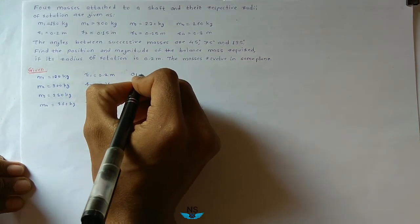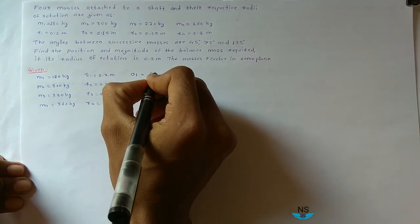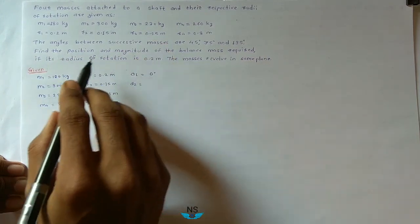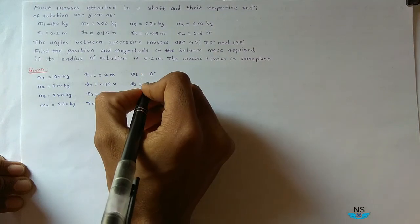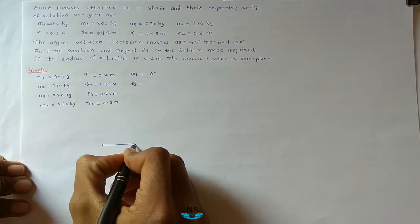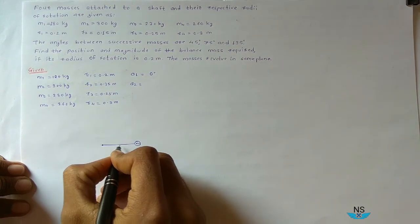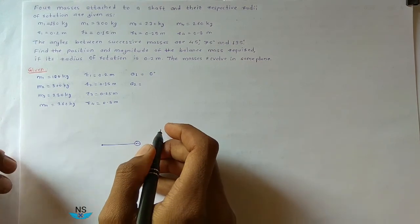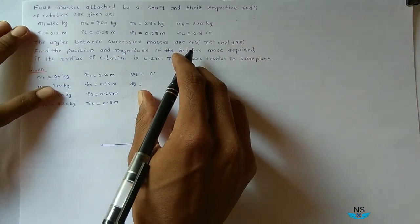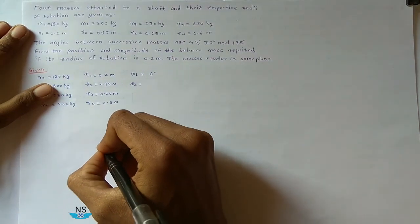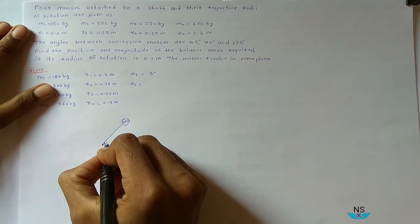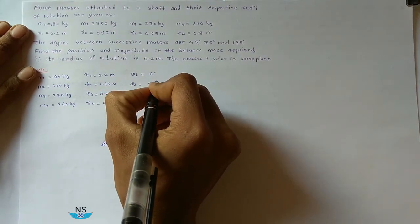Now for the angles: the angle of the first mass theta1 is 0 degrees. The angle between successive masses — that is, the angle between m1 and m2 — is 45 degrees. So theta2 is equal to 45 degrees.